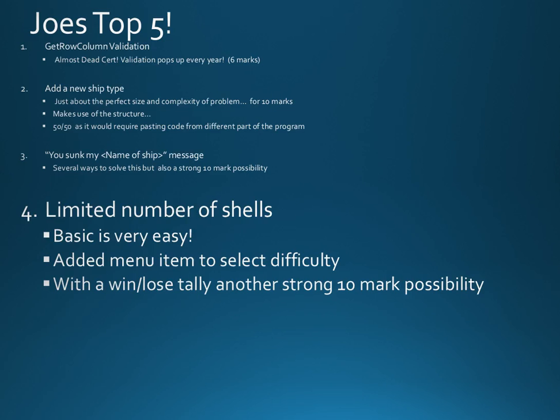We are on the 4th tutorial and the idea is that rather than having an infinite number of shells in battleships, we could say you have only got 50 shells, for instance. For this video I am only going to look at the basic one — just a fixed number of shells — but it is relatively easy to add a menu so we could say you have got an easy game with 50 shells, a tricky game with 30 shells and an absolute nightmare game with 20 shells. We could also add a win-lose tally so that after every game it stores whether you won or lost, which of course only makes sense on a limited shells game.